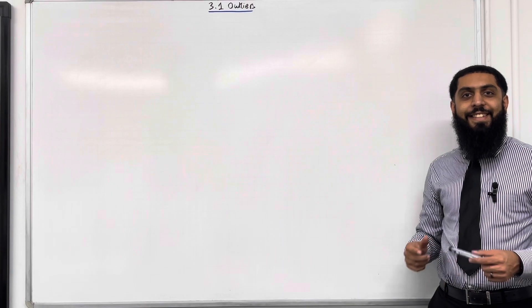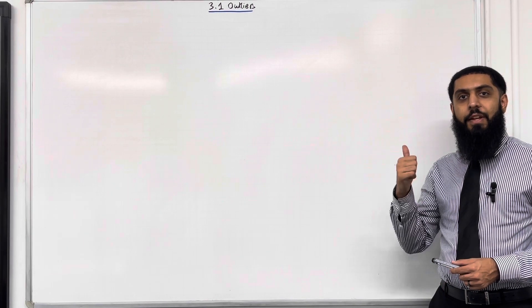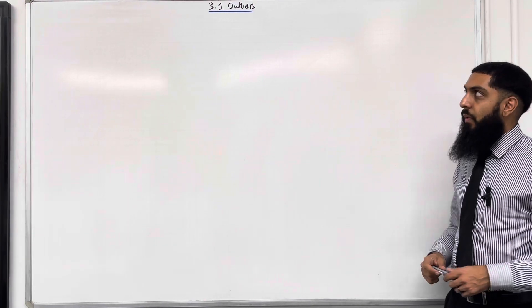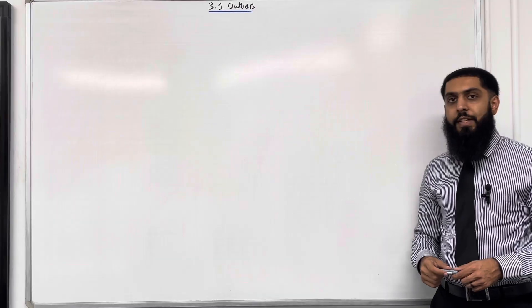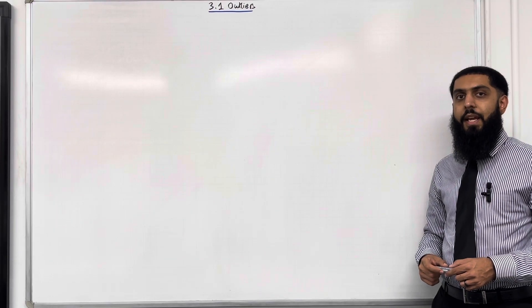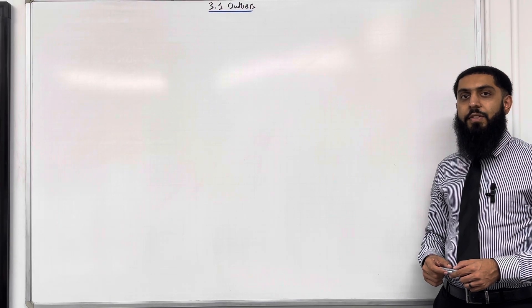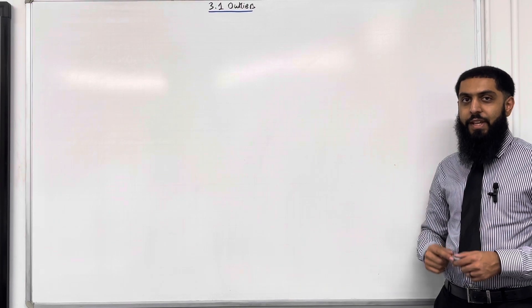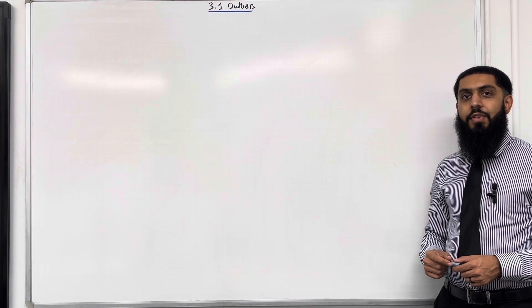Welcome back. In this teaching video I'm looking at 3.1 outliers. 3.1 represents chapter 3 section 1 of the Pearson A-Level Maths Statistics Tier 1 textbook. Let's go through the key facts of this section.